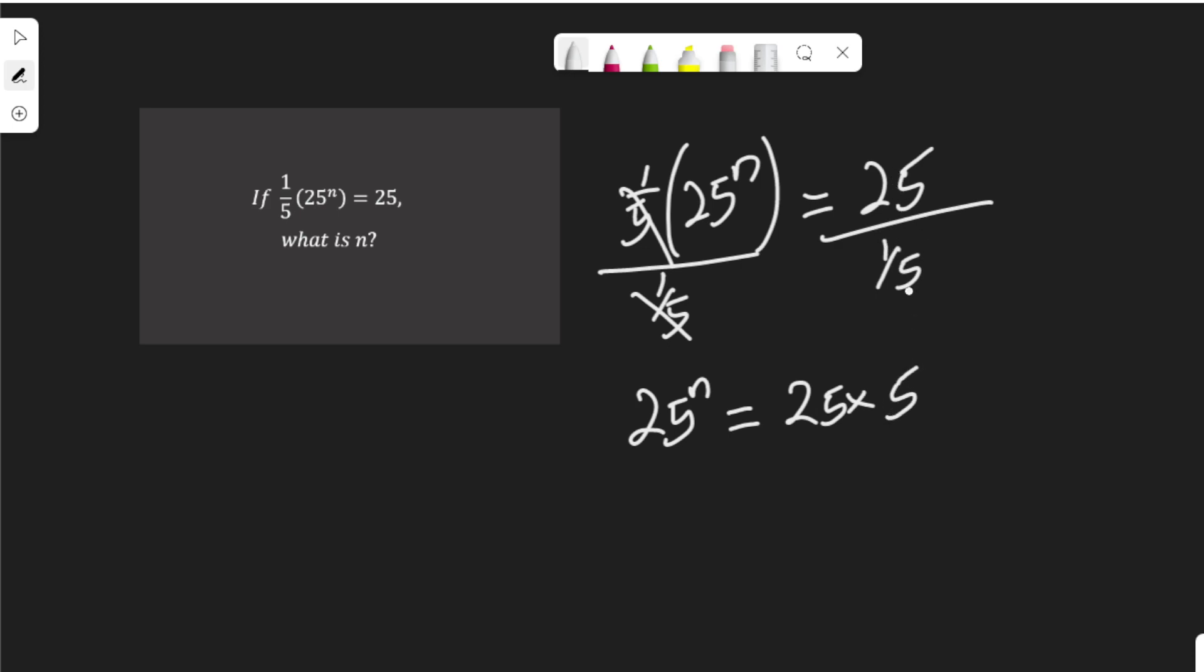25 divided by 1 over 5 is 25 times 5, and this is what I did here. Of course, when dividing by a fraction, the sign of division will turn to multiplication. I will multiply by the reciprocal of the original fraction.